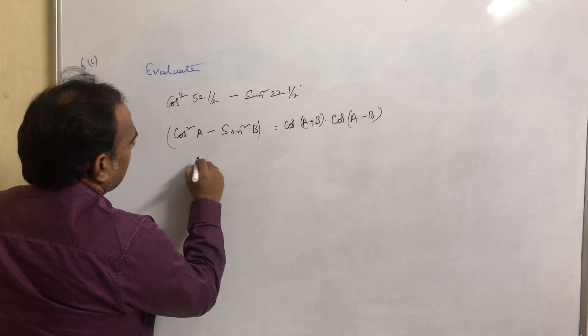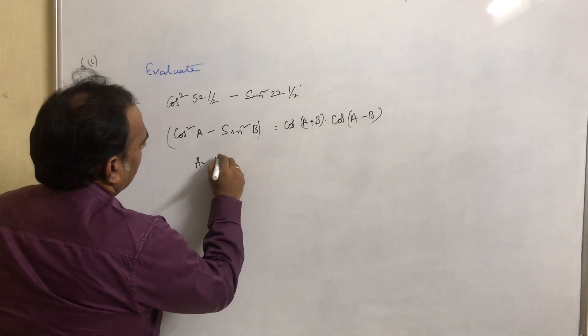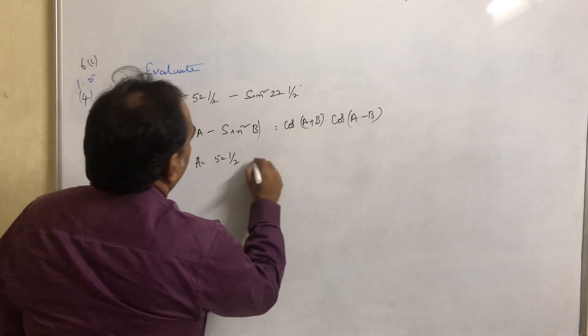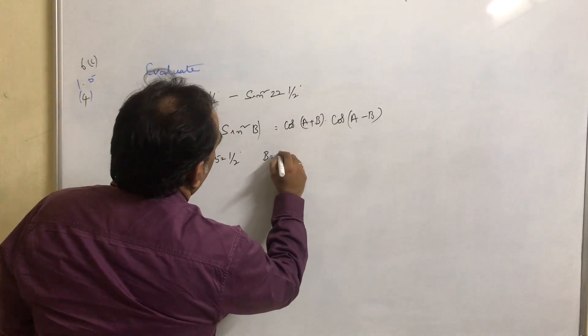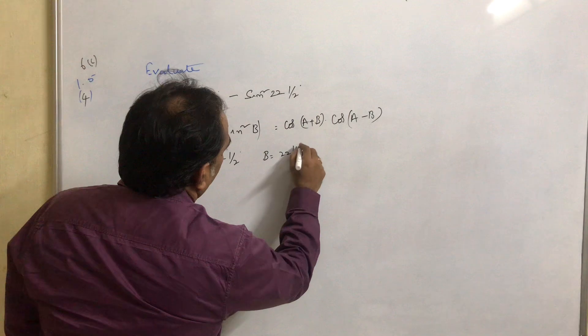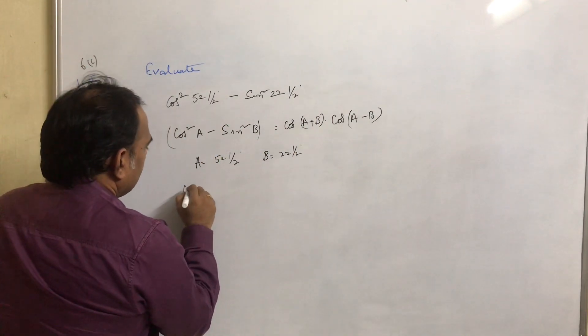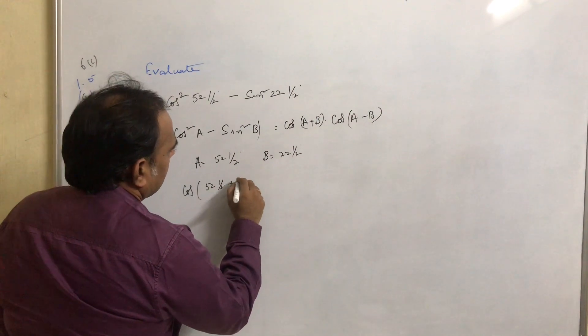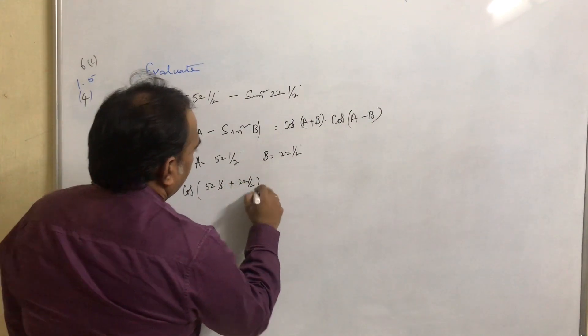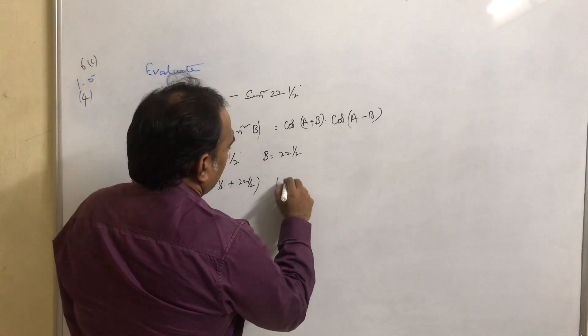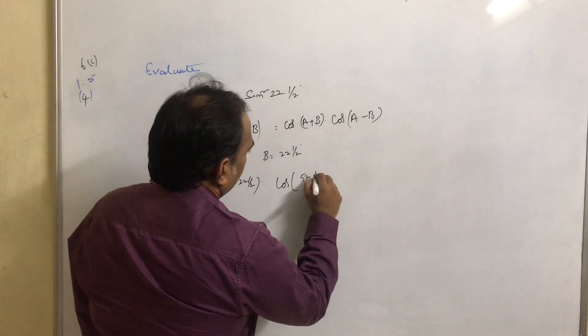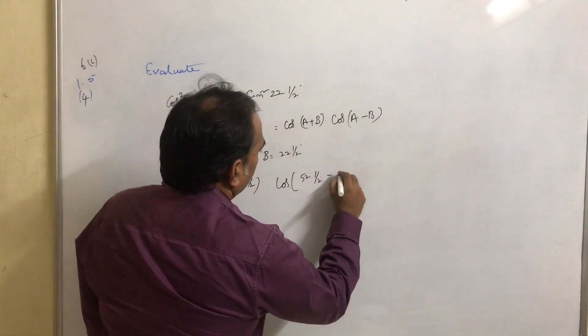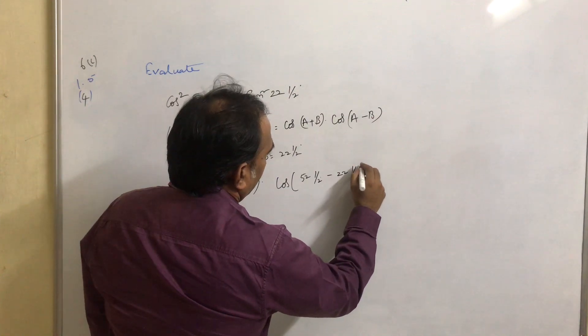Now what is the value of a? a equals 52½°. And what is the value of b? 22½°. And what is cos 52½° + 22½° into cos 52½° - 22½°?